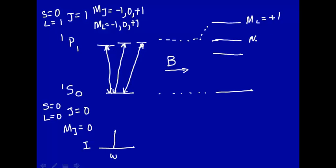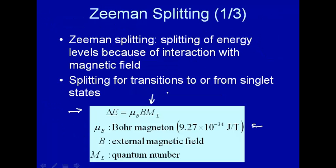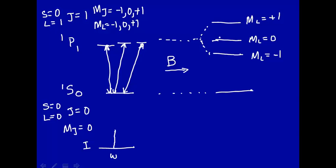This would be m_l equals plus 1. Here m_l equals 0, and here m_l equals minus 1. So the value for m_l equals 0, the energy level splitting there is 0. So that's the same energy as it was. The energy level described by m_l equals 0 is not changed.